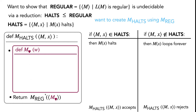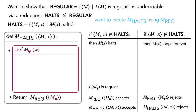We know that mHALTS accepts precisely when mReg accepts, because we just return whatever mReg returns, and similarly it rejects when mReg rejects. Based on our knowledge that mReg is a decider for REGULAR, mReg on mHeart accepts only if the language of mHeart is regular, and rejects only when the language of mHeart is not regular. So the relationship is clear: we need to make sure that when mx halts, the language of mHeart is regular, and when mx loops forever, the language of mHeart is irregular.